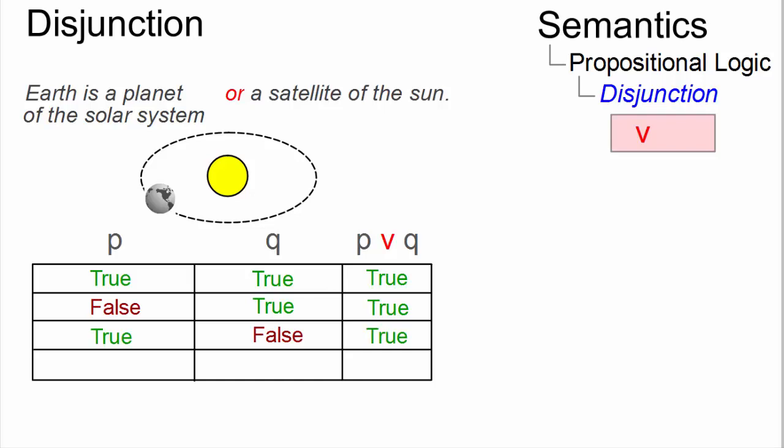And similarly, if Q is false and the Earth is not a satellite of the Sun, the whole proposition, Earth is a planet or not a satellite of the Sun, is still true.